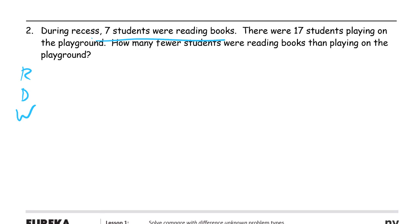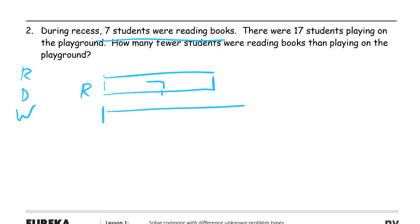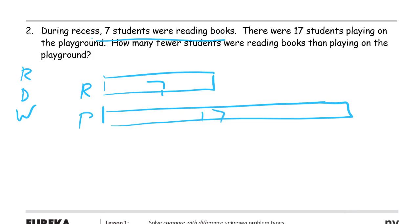We're going to draw what it says. There are seven students reading books, so we draw that on a piece of tape — that's seven, and R for reading. And 17 playing on the playground, so we start at the same endpoint and the 17 is going to be longer than the seven. Now we're trying to find out how many fewer are reading books than playing — that's this missing piece here, how much shorter is this part.